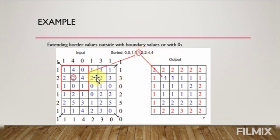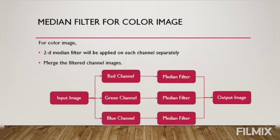Median filter for color images. So for color images, we need to apply the 2D median filter on each channel separately. For example, we will apply the median filter on red channel, green channel, and blue channel, and then we will simply merge the output of these filters to obtain the output image.